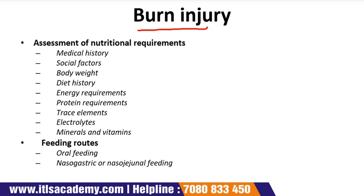The next injury type is burn injury. Assessment of nutritional requirements is very important and must go through medical history, including total percent body surface area burned, percent full thickness or partial thickness area burned, location including face and hands, smoke inhalation injury, and history and type of injury — whether flame, hot liquid, or contact. Previously existing medical history such as diabetes or gastrointestinal tract problems is also relevant.